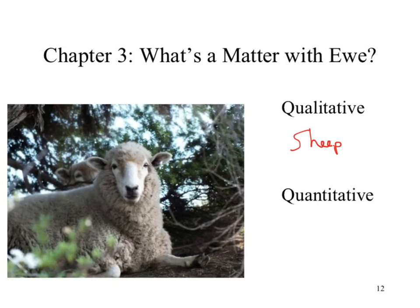What else could we observe? It's white — that might be debatable. We could also make a statement about the size of the sheep: small, large, something like that. We'd classify that as qualitative. Do we have any quantitative observations? There's one sheep — actually there's another one in the back, so we have two. We can start to bring in numbers associated with this.